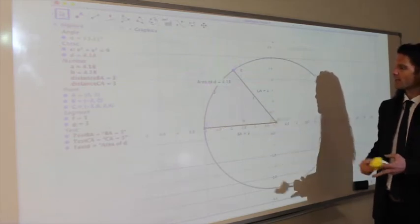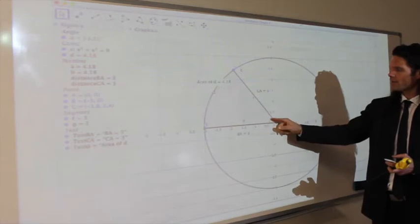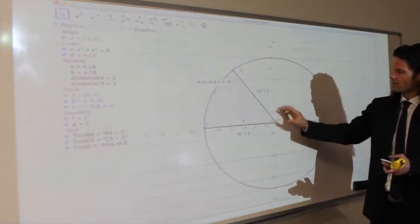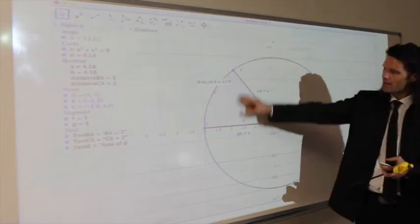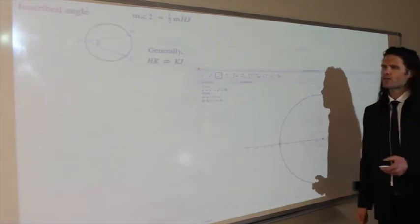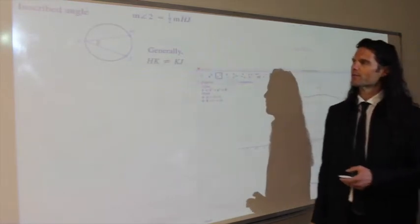So if we take the proportion of this angle here in comparison to the larger 360 degrees and multiply that by the entire area of the circle, then we get that piece of the pie there. So it's so intuitive that we really don't need to prove it so much.